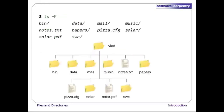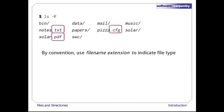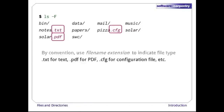Here's that output again with a picture of what it's showing us. You may have noticed that the file names are all something dot something. By convention, the second part, called the file name extension, indicates what type of data the file holds: .txt signals a plain text file, .pdf indicates a PDF document, .cfg is a configuration file full of parameters for some program or other, and so on.